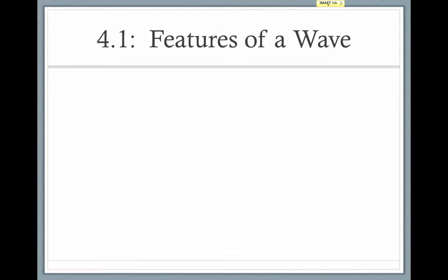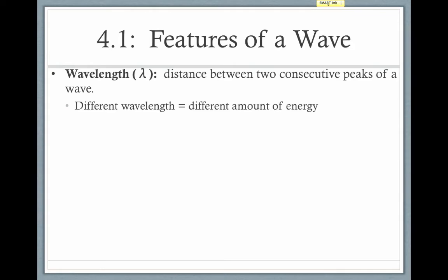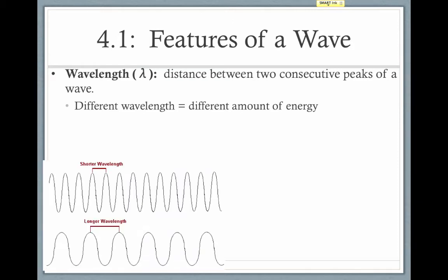So there are a few properties of waves that we can define. The first is wavelength. Wavelength is the distance between two consecutive peaks of a wave. So for instance, I can choose any two peaks. Here I've chosen this one and this one. And if I measure the distance between those peaks, I have the wavelength.